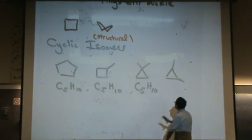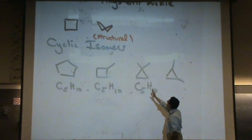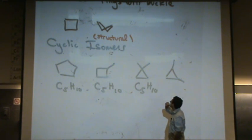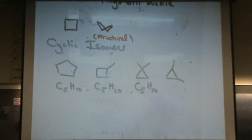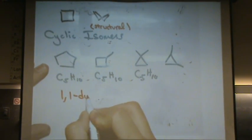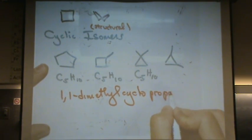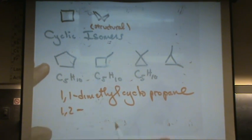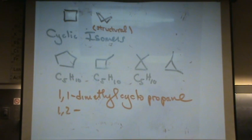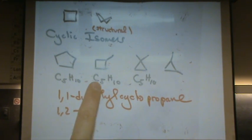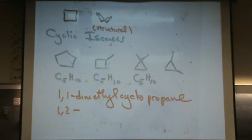Student: Is that one comma one? Dr. E: Yes, the third one is 1,1-dimethylcyclopropane. The fourth one would be 1,2, same name. Student: When you have one group attached to a ring, do you have to put a number? Dr. E: No, not necessarily. If you're talking about something like methylcyclobutane, the number is not necessary in that case.